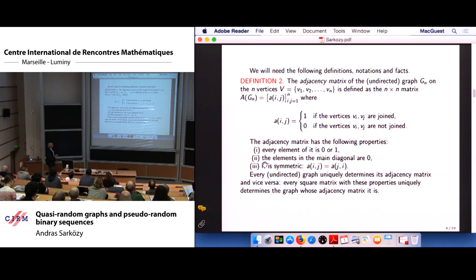Now we will need the following definitions, notations, and facts. The first definition is the definition of adjacency matrix of a graph G_n. The subscript usually denotes the number of the vertices, and don't forget that we will speak all the time on undirected graphs. Suppose the vertices of the graph are capital V, this set is denoted by capital V, and the vertices themselves are denoted by V1, V2, Vn, and it is defined as an n-by-n matrix.